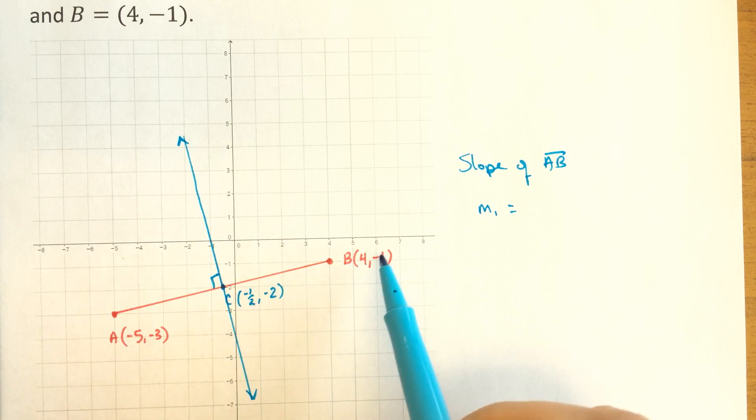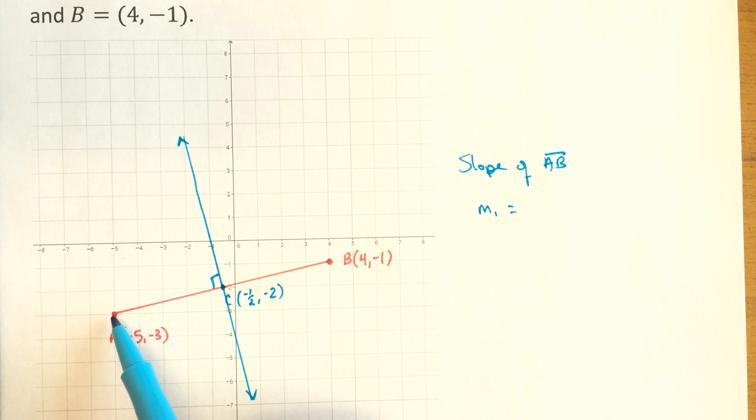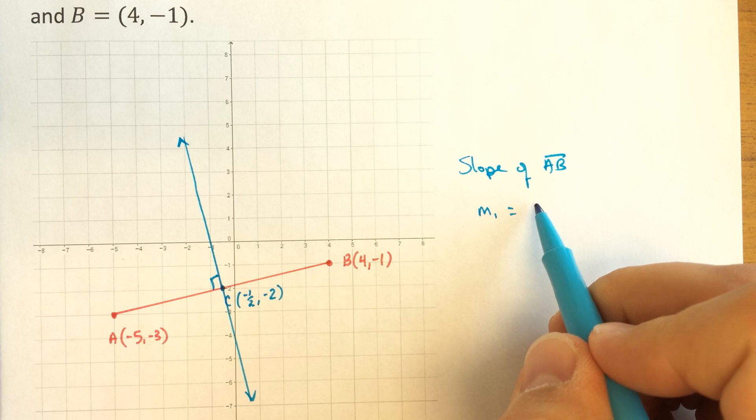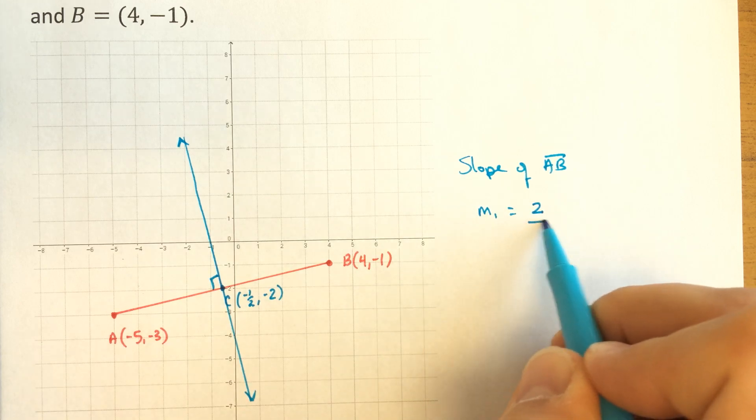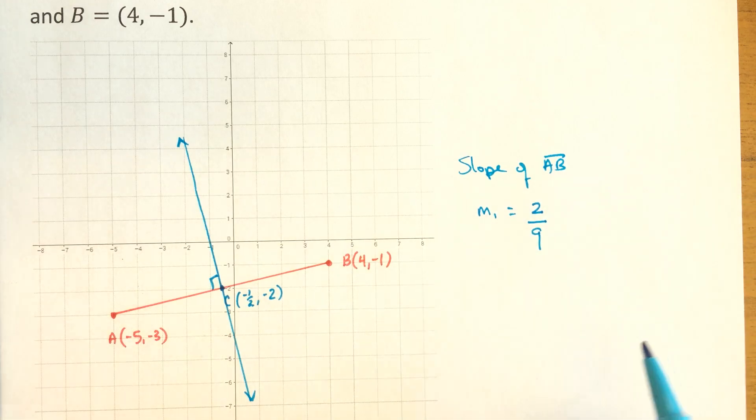That slope, you can calculate this doing some subtraction and stuff. Or, in this case, because they're nice whole numbers, you can just count on the graph. We're going to go up two. From A to B, you go up two as we go over nine. We have a rise of two and a run of nine. And that's positive. You can see it's sloping upwards.